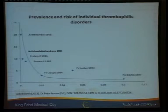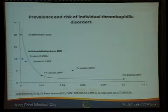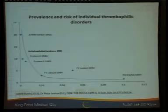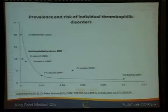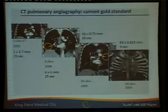The first thrombophilia abnormality was discovered in 1965 — antithrombin. Then we have protein C, antiphospholipid, and protein S. After 1990, we have the genetic inherited thrombophilias: factor V Leiden and prothrombin gene mutation. Antithrombin-3 deficiency is the most prothrombotic — it can increase risk 20-fold — while protein C deficiency increases risk 10-fold. These are the major thrombophilias. The minor thrombophilias — factor V Leiden and prothrombin mutation — increase risk only two to five-fold, which is why we call them minor thrombophilia.